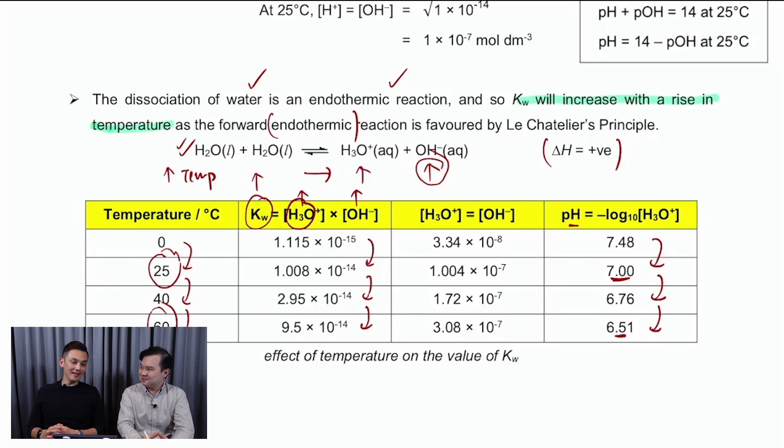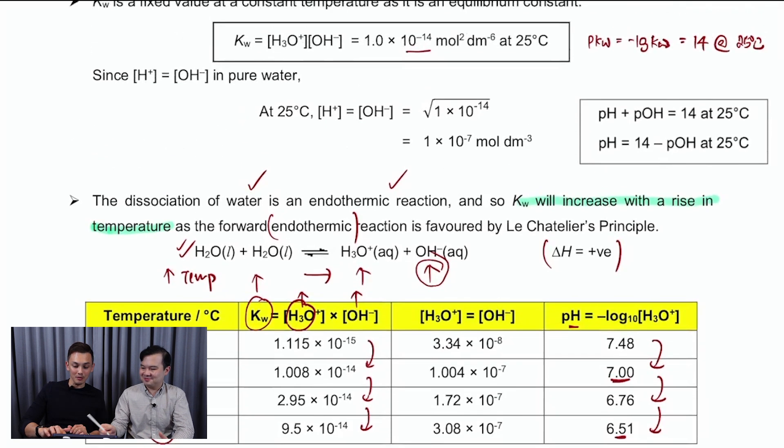The thing that everybody must know is, there's this formula that we have shown over here, where pH plus pOH equals 14. Now, this is true only at 25 degrees. Please think of only at 25 degrees. The moment you change the temperature, this value is going to change. That's why at different temperatures, pH plus pOH is not equals to 14.